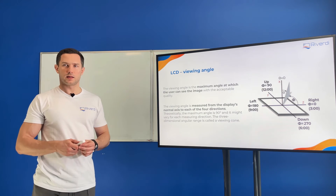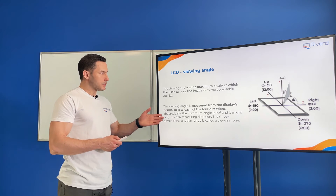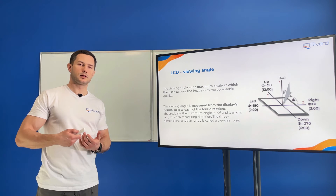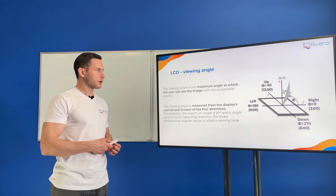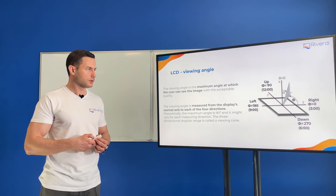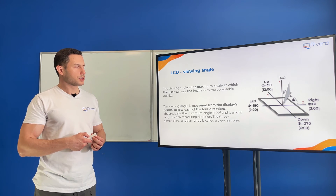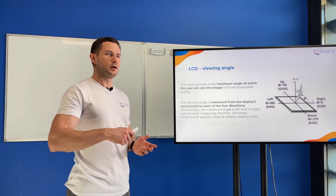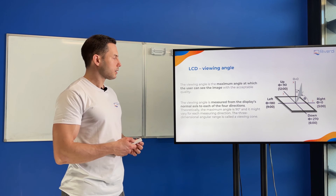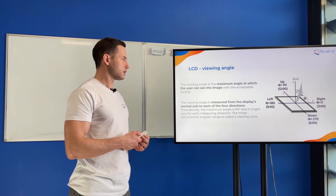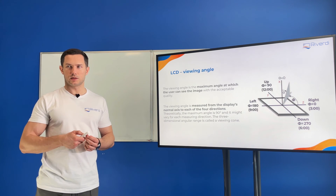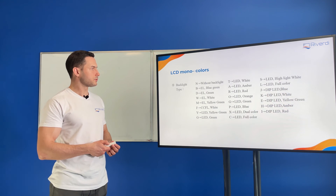For monochrome displays the numbers are usually lower. The viewing angle is basically the maximum angle at which the user can still see a clear image on the screen. When we measure it technically, it's done with a camera measuring the real contrast as it moves at different angles over the screen. For the user, the practical effect is simple: if the angle is too large, the image will not be clear or not visible at all.